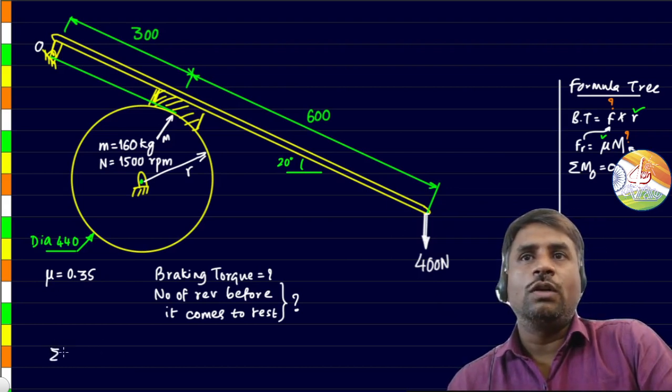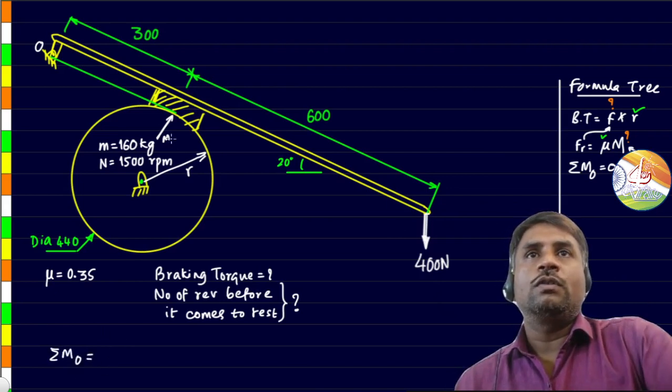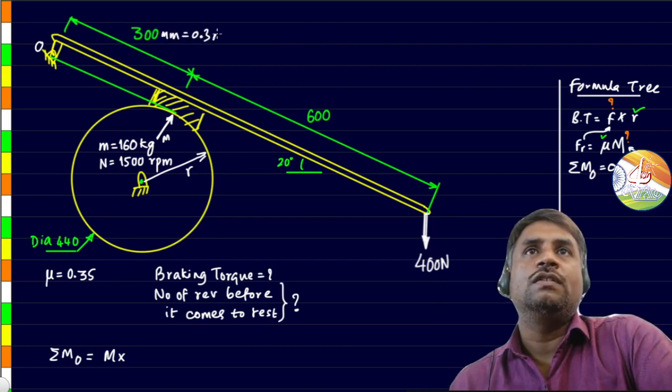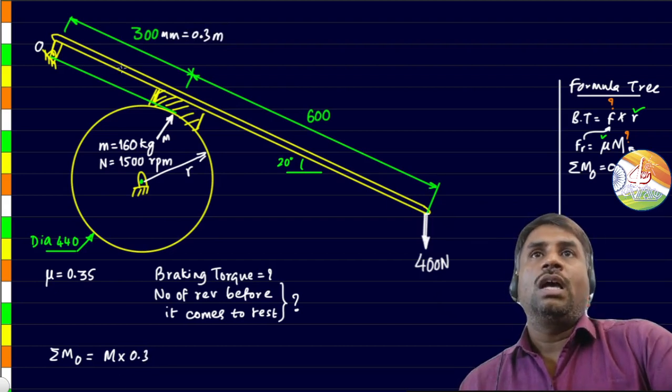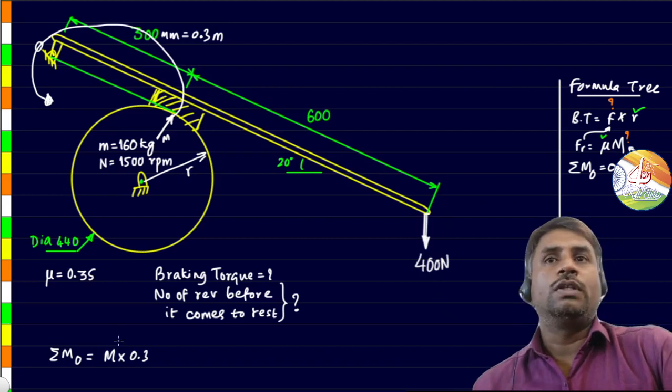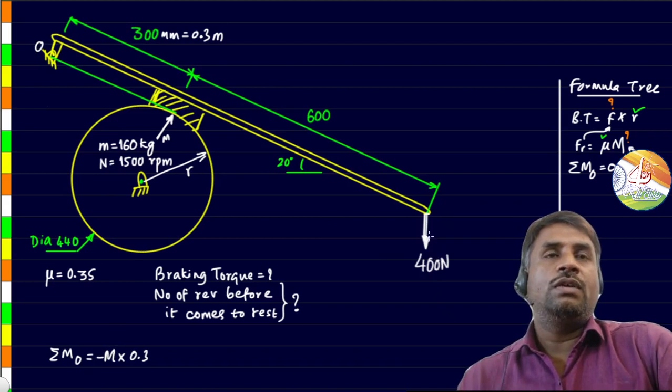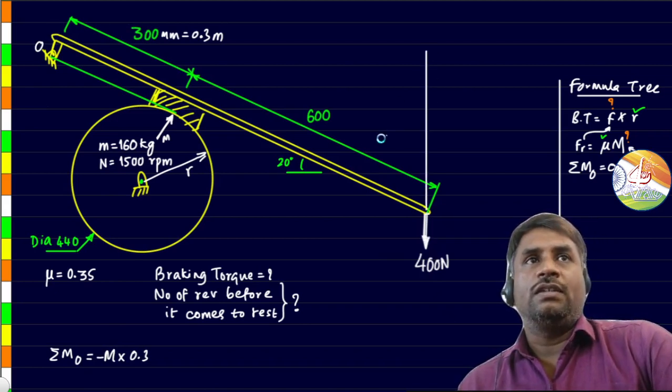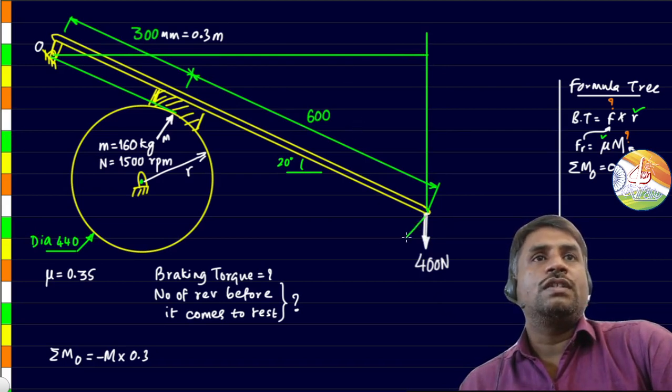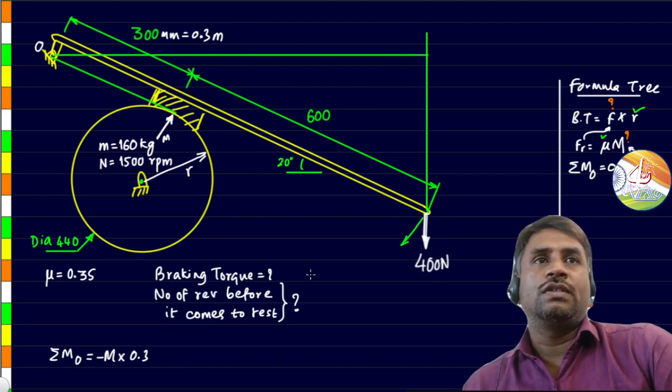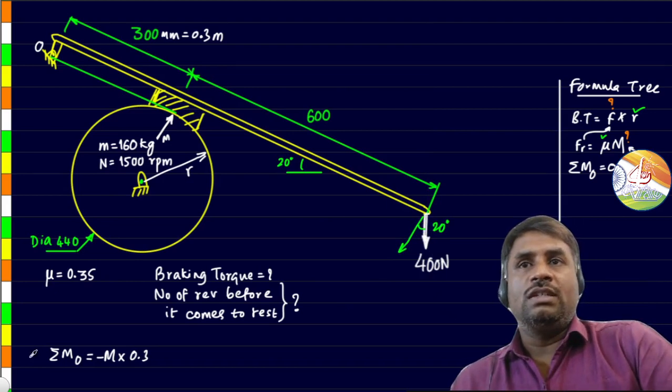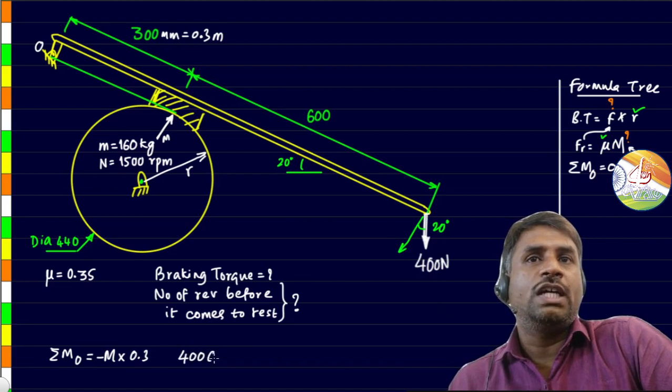First we will have to take the sum of all the moments about the fulcrum point O. The first force that is acting is the normal reaction. Normal reaction M is at 300 mm which if you convert it to meters is 0.3 meters. So let us multiply this to 0.3. This force is going to rotate the lever in anticlockwise direction when we consider the moment about point O, so we take it as negative. Next we will have to consider this force over here. This one is slightly complicated.